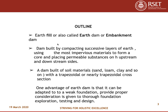What is an earth dam? It is an earth fill, also called an earth dam or an embankment dam, which is built by compacting successive layers of earth, using the most impervious materials to form a core and placing permeable substances on the upstream and downstream sides. It is also defined as a dam built of soil materials like sand, loam, clay and so on, with a trapezoidal or nearly trapezoidal cross section.